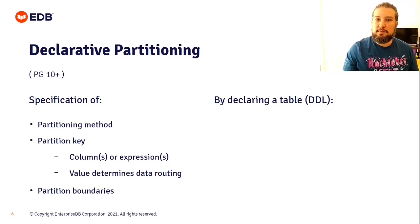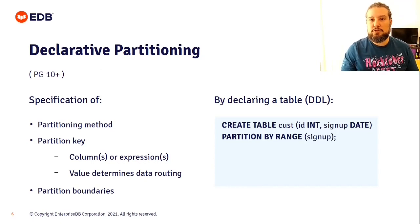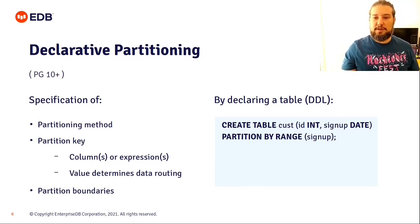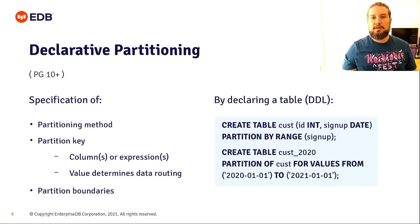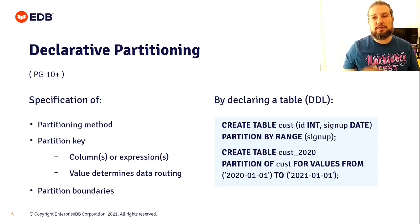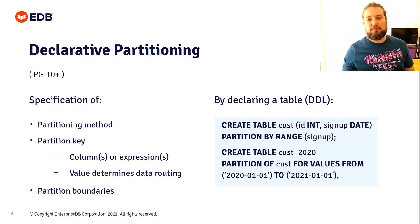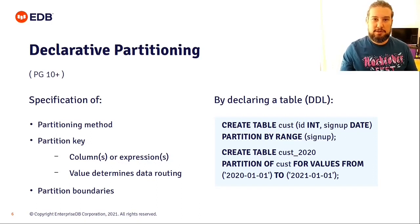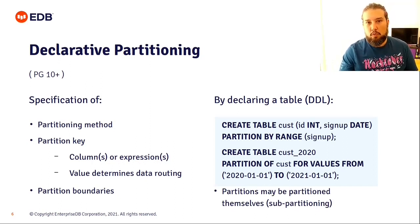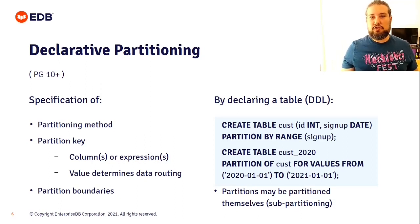You will also be defining partition boundaries — where each partition value starts and ends for each table. It's naturally DDL: you use CREATE TABLE. For example, create table customers with an ID and a signup date, and you partition customers by signup date. The second step is to create the individual partitions: create table customers_2020 as a partition of customers for values from the first day of 2020 to the first day of 2021, not inclusive. Partitions may also be partitioned themselves, so you can perform sub-partitioning.